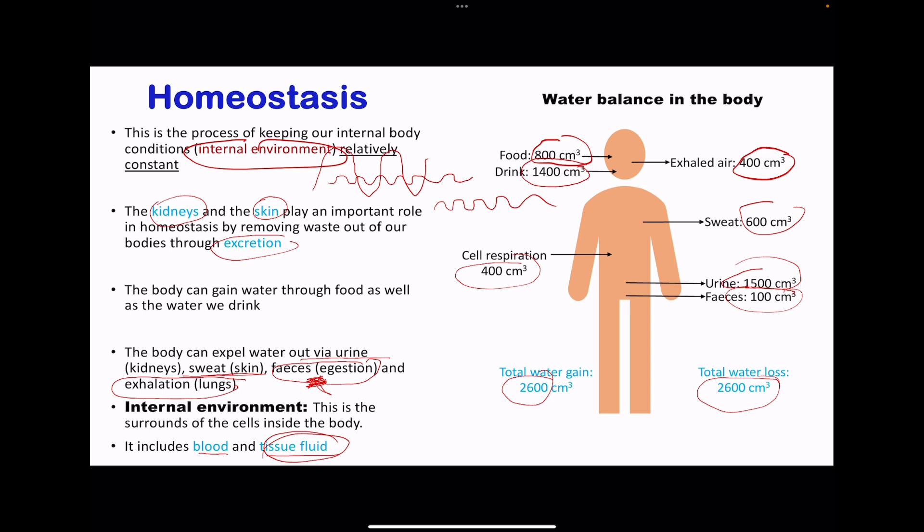Homeostasis ensures that the water levels in the blood do not go beyond where they should be. Otherwise, the cells are going to be bathed in tissue fluid that is more dilute, and that is going to cause the cells to take up more water, causing them to be destroyed.